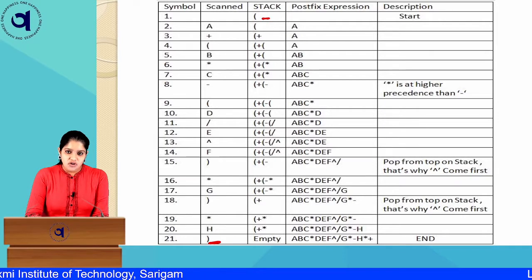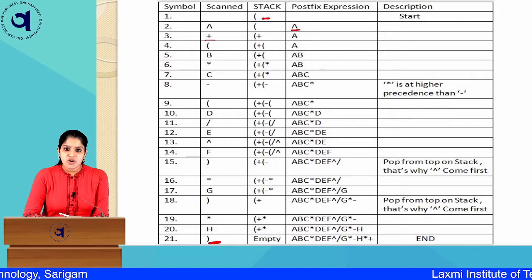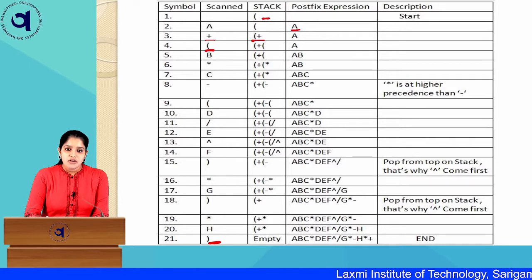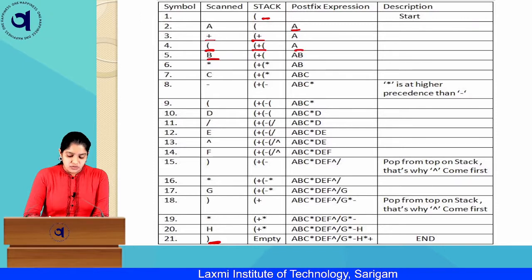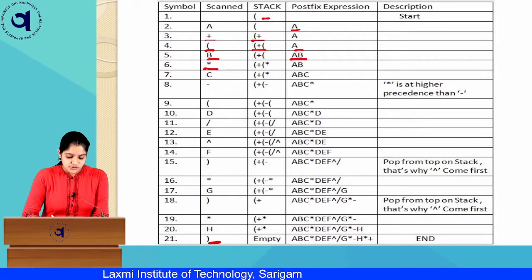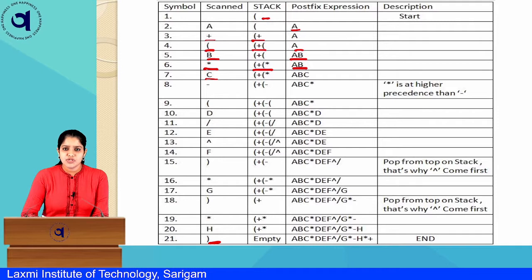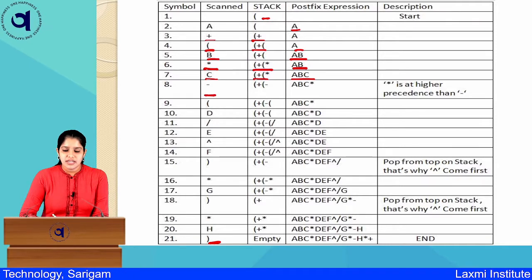A is an operand — push to Y. Plus is an operator — push to stack. Opening bracket — push to stack: bracket, plus, bracket. B is an operand — push to Y: A, B. Star is an operator — push to stack: bracket, plus, bracket, star. C is an operand — Y: A, B, C. Next is minus. Star on the stack top has higher precedence than minus, so we pop star and push to Y, then push minus to stack. Y: A, B, C, star. Stack: bracket, plus, bracket, minus.